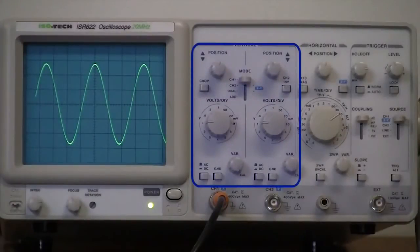The set of controls on the left of the oscilloscope vary the position and scaling of the vertical or voltage axis of the signal displayed on the oscilloscope screen.